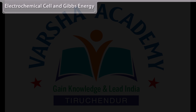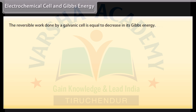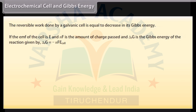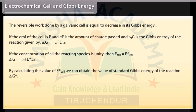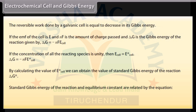Electrochemical cell and Gibbs energy: The reversible work done by a galvanic cell equals the decrease in its Gibbs energy. If EMF of the cell is E, and nF is the amount of charge passed, then ΔrG = −nFE_cell. When all reacting species are at unit concentration, ΔrG° = −nFE°_cell. By calculating E°_cell, we can obtain the standard Gibbs energy ΔrG°. Standard Gibbs energy and equilibrium constant are related by: ΔrG° = −RT ln K.